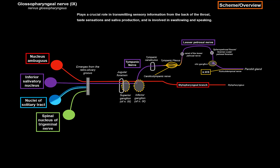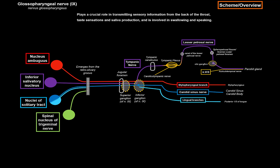For the sensory components: fibers from the carotid body and sinus baroreceptors and chemoreceptors travel towards the inferior ganglion of the glossopharyngeal nerve, then to the nucleus of the solitary tract. Special sensory fibers for taste from the posterior one-third of the tongue go to the inferior ganglion, then synapse with the gustatory part of the nucleus of the solitary tract. General somatic sensory fibers from the posterior one-third of the tongue go towards the cell bodies of the superior ganglion, then continue to the spinal nucleus of the trigeminal nerve.